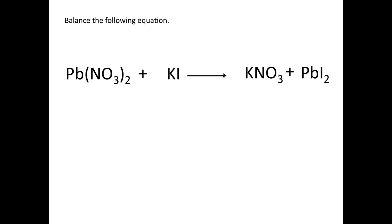Now I want to show you how to balance an equation that contains a polyatomic ion. You can do this the same way as before — counting up every individual atom — but there's a shortcut. If you have a polyatomic ion on the reactant side and that exact same polyatomic ion on the product side, you can treat that polyatomic ion as one single unit without separating it into its individual atoms.